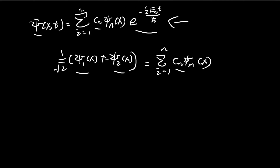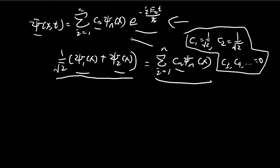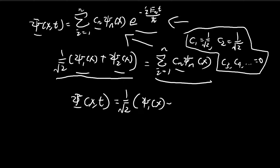In this case it's quite easy because we can just compare coefficients directly. It's obvious that c1 equals 1 over the square root of 2, c2 equals 1 over the square root of 2, and then c3, c4, and onwards are all equal to 0. We don't have to do any special calculations — we only need to compare the coefficients.